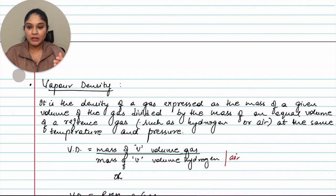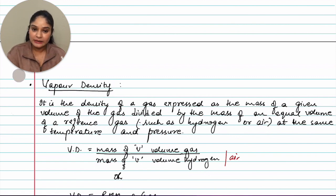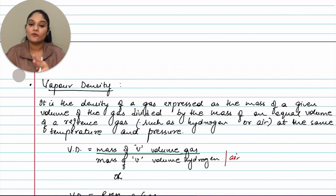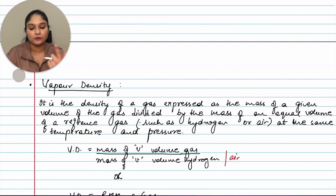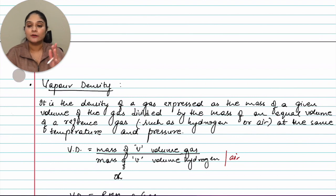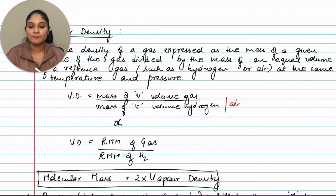The definition says: vapor density is the density of a gas expressed as the mass of a given volume of the gas divided by the mass of an equal volume of a reference gas — which could be hydrogen or air — at the same temperature and pressure. The formula is: vapor density = mass of volume of gas ÷ mass of same volume of hydrogen.